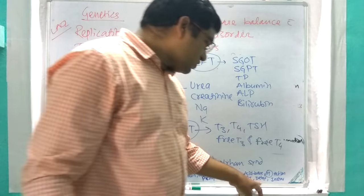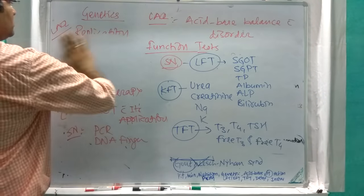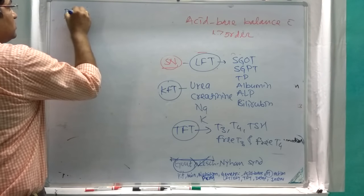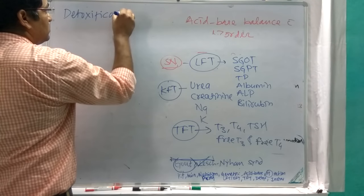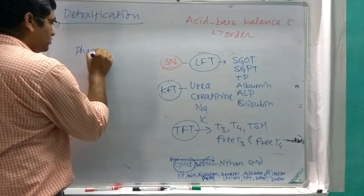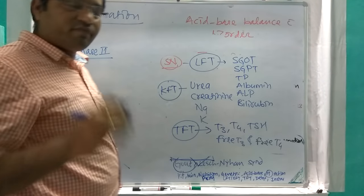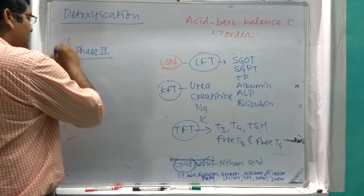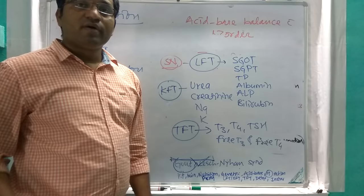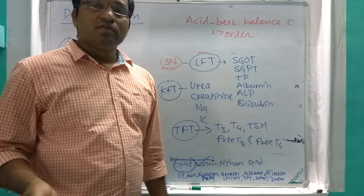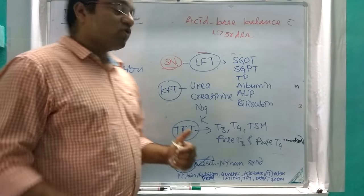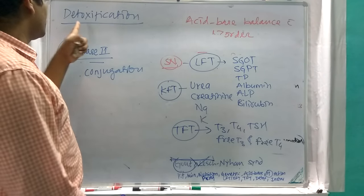Detoxification is a very important short note. In detoxification — also called biotransformation — there are two phases: phase one and phase two. Phase two is the important short note, and within phase two, the conjugation reaction is key. For example, bilirubin is combined with UDP glucuronic acid and converted into bilirubin diglucuronide and excreted from the body — this is an example of detoxification via conjugation reaction.